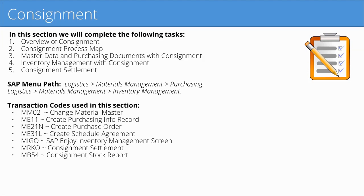I also always show the SAP menu paths we're going to be using for most of these transactions. If you're first starting out in SAP, you probably learn where the transactions are by going through the SAP menu tree. Most of the purchasing transactions we're using are under the Logistics > Materials Management > Purchasing folder. The inventory transactions will be under Logistics > Materials Management > Inventory Management. If you prefer just typing transaction codes in the transaction box because it's faster, I also provide those for you.